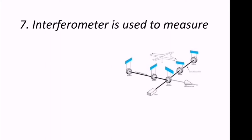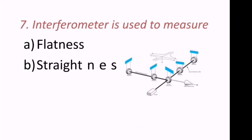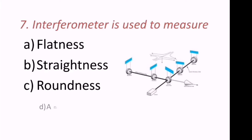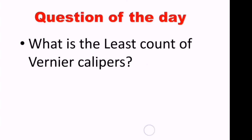Seventh question: Interferometry is used to measure what? The options are flatness, straightness, roundness, or angularity. Interferometry is used to measure flatness — A is the correct answer.